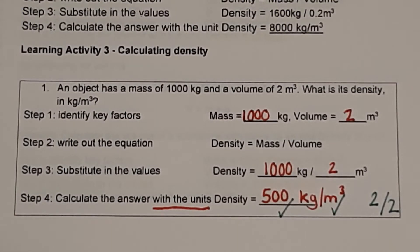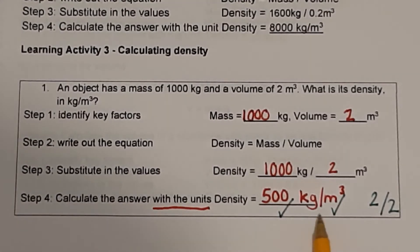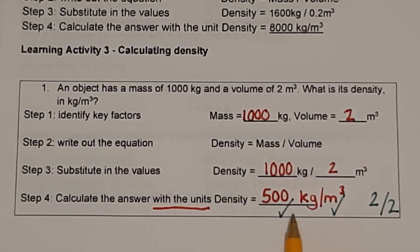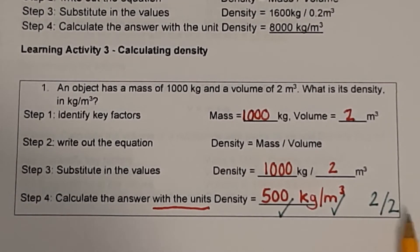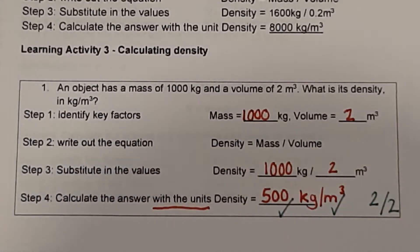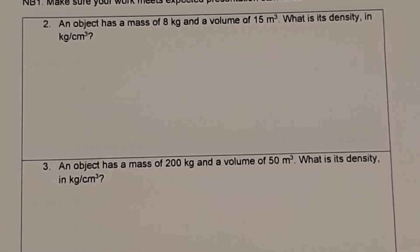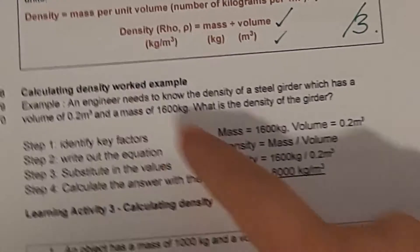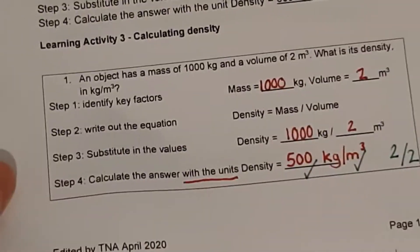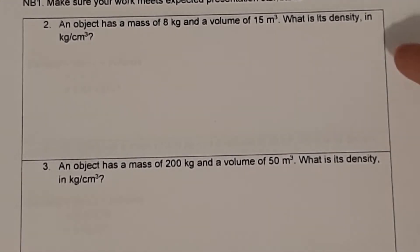Okay, let's go through that. Hopefully you calculated 500, because 1,000 divided by 2 is 500, and our units are kilograms per metres cubed. Make sure you've got lowercase letters and no capitals. We'd give a generous 2 out of 2, because they gave you the units in this question — in an exam you'd probably only get one mark. Moving on to page 17, use the four-step system to answer questions 2 and 3. Pause the video, then we'll mark them together.